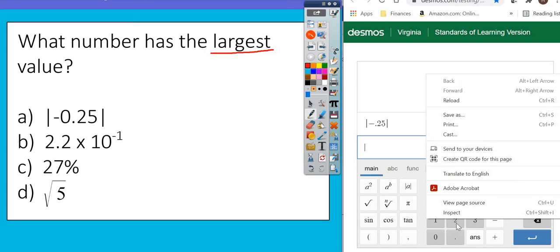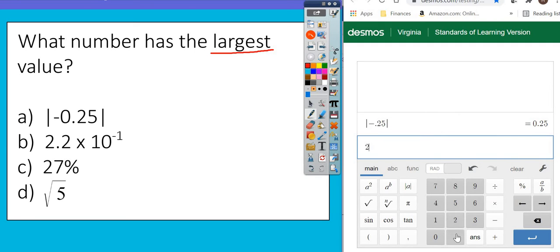Then the next one is 2.2 times 10 to the negative 1, and that is 0.22.